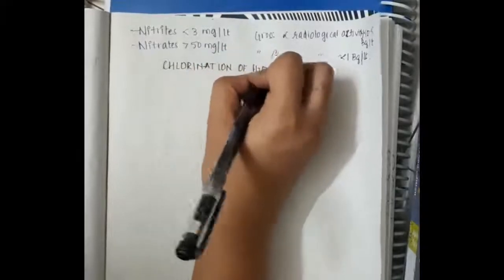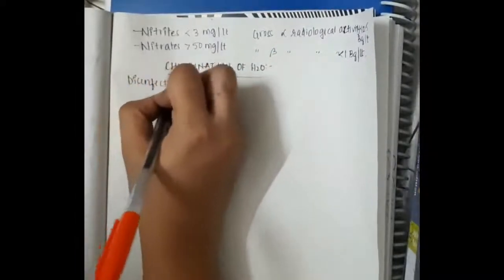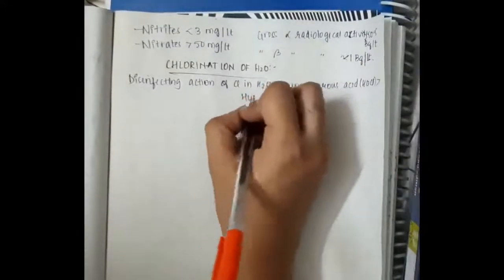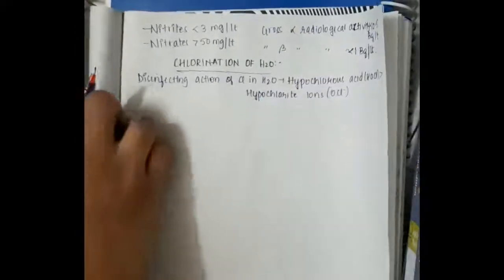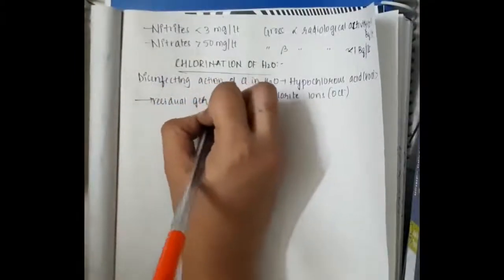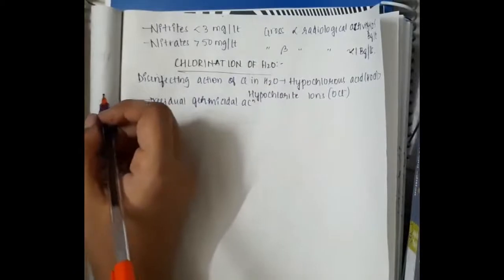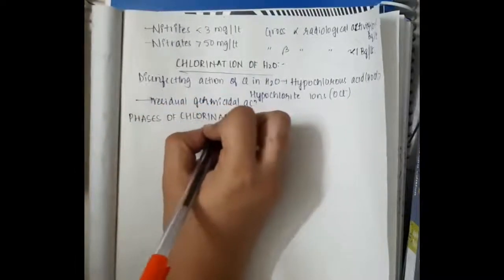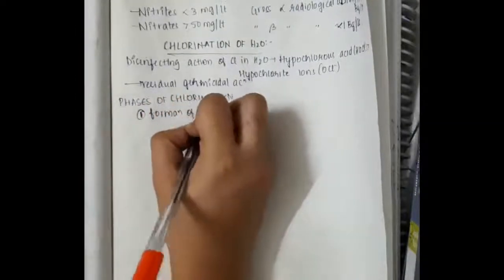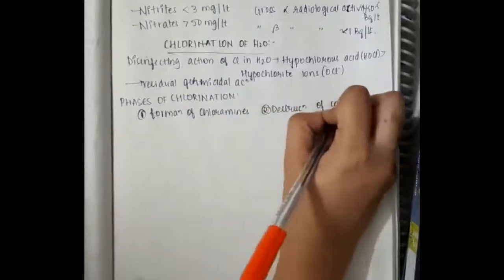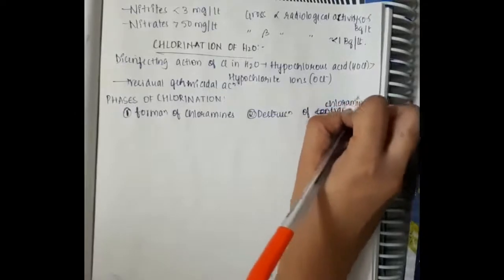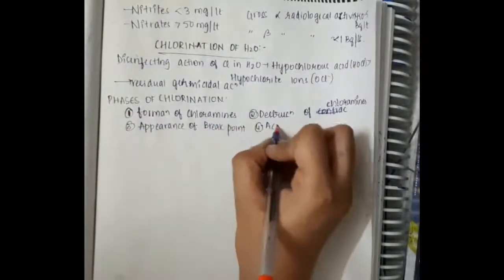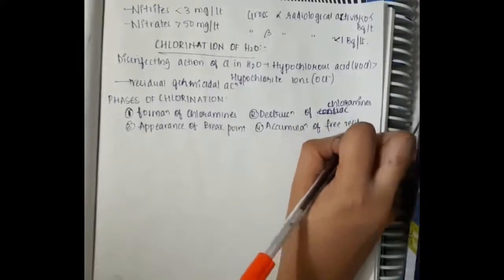Let us learn some points about chlorination of water. Chlorination of water is the disinfecting action of chlorine in water — that is hypochlorous acid more than hypochlorite ions. In disinfection of water with chlorine we use hypochlorous acid mostly, and this has residual germicidal action. The phases of chlorination include: first, formation of chloramines; second, destruction of chloramines; third, appearance of break point; and fourth, accumulation of free residual chlorine.